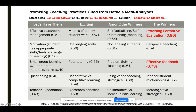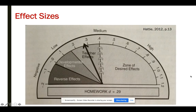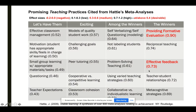Small group learning with appropriate materials and tasks, goals, problem solving, using varied teaching strategies, collaborative learning — these are all effective. But the things in the winner category, way up at the top, are providing formative evaluation and providing feedback in response to that formative evaluation. And student-teacher relationships comes in at 0.72. So that's what we're focusing on today: conducting formative evaluation and providing effective feedback.